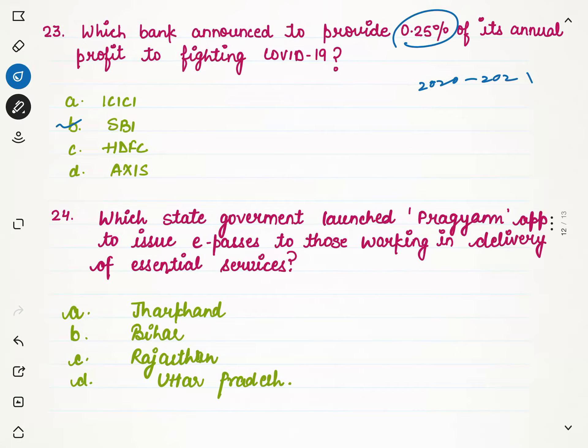Which state government launched the Pragya app to issue e-passes to those working in delivery of essential services? When lockdown was imposed, essential services like food and medicine still had to be delivered to people. One state launched an app called Pragya app for issuing e-passes to deliver essential services. The options are Jharkhand, Bihar, Rajasthan, or Uttar Pradesh. The first to use this app was Jharkhand, so the correct option is option A — Jharkhand.